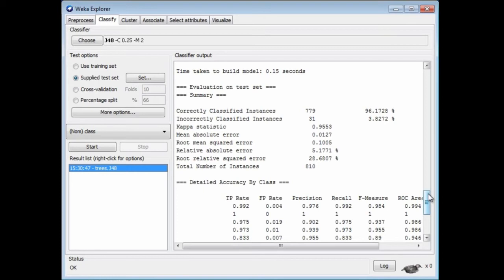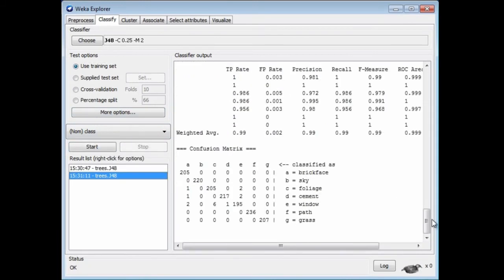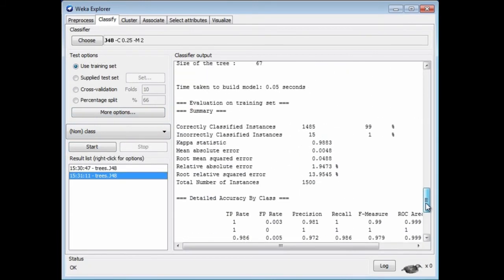Supposing I was to evaluate it on the training set, I can do that by just specifying under Test Options, Use Training Set. Now it will train it again and evaluate it on the training set, which is not what you're supposed to do because you get misleading results. Here it's saying the accuracy is 99% on the training set. That is not representative of what we would get using this on independent data.